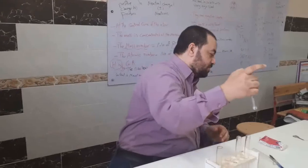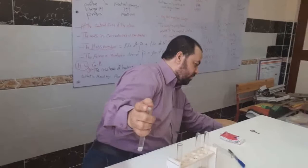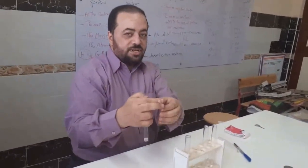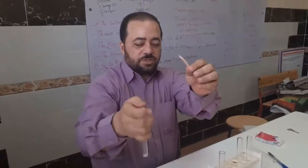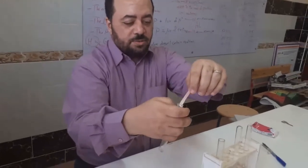Red litmus paper will turn blue with magnesium hydroxide. This is the red litmus paper. We put the red litmus paper on the magnesium hydroxide.